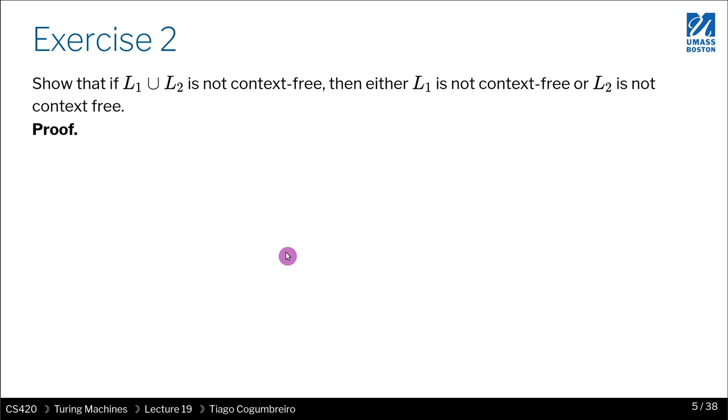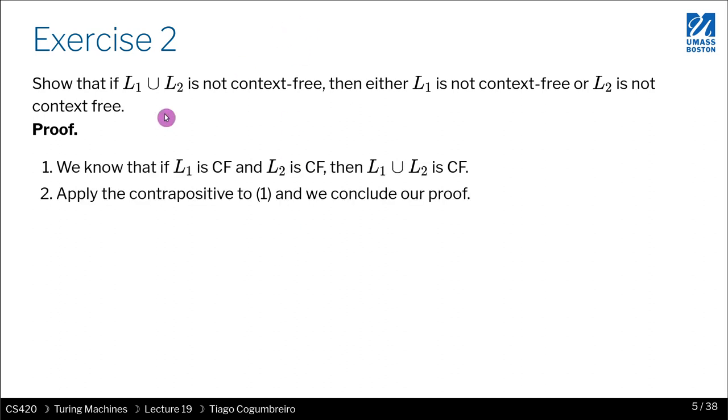So, knowing that, what we can do is, we have this fact 1, we can apply the contrapositive, and that tells us that we have not L1 union L2 implies the negation of this whole thing, and then if you simplify, you will get that L1 is not context-free or L2 is not context-free.